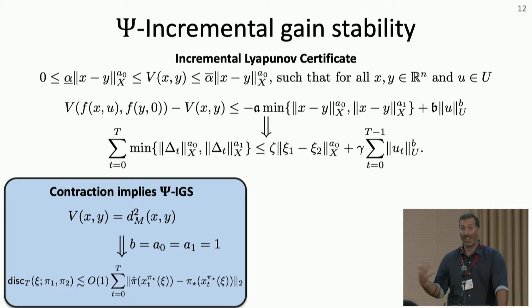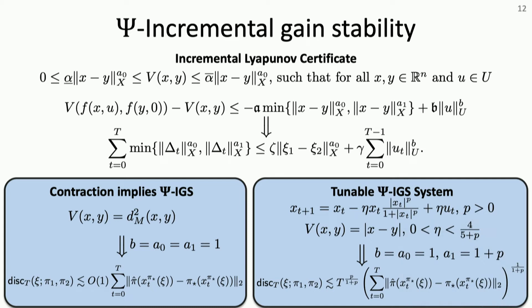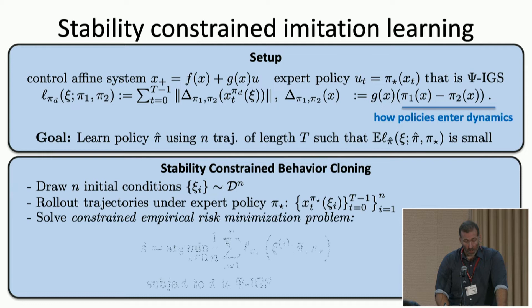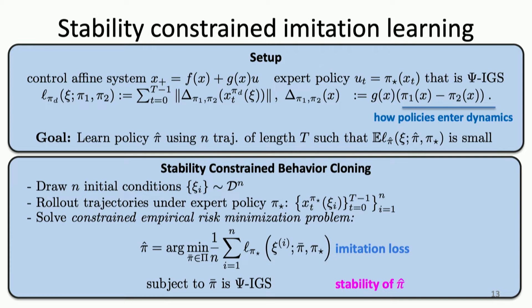As an example, sensible things work: if I have a contracting system, I can use the geodesic distance between two points as a Lyapunov function certifying this property. We also came up with a toy example where you can tune the underlying stability properties explicitly to interpolate between bounded Lyapunov stability and exponential stability. I'm way over time here, but if we quickly think about what this looks like in the context of imitation learning: rather than just solving the supervised learning problem, I'm going to solve this imitation loss and add the additional constraint that my learned policy satisfies this IGS property.